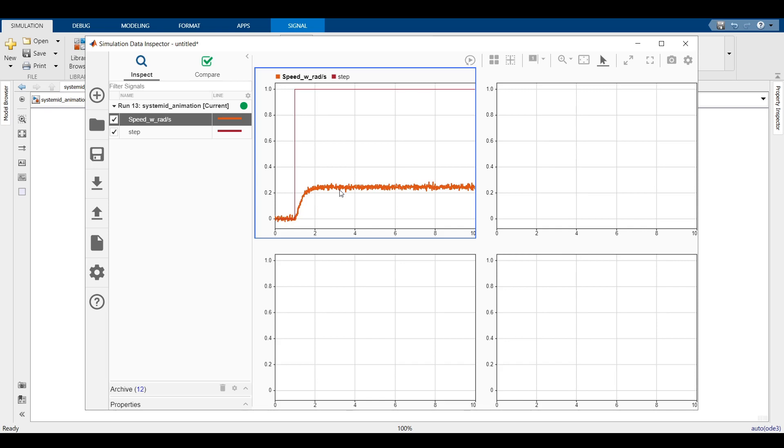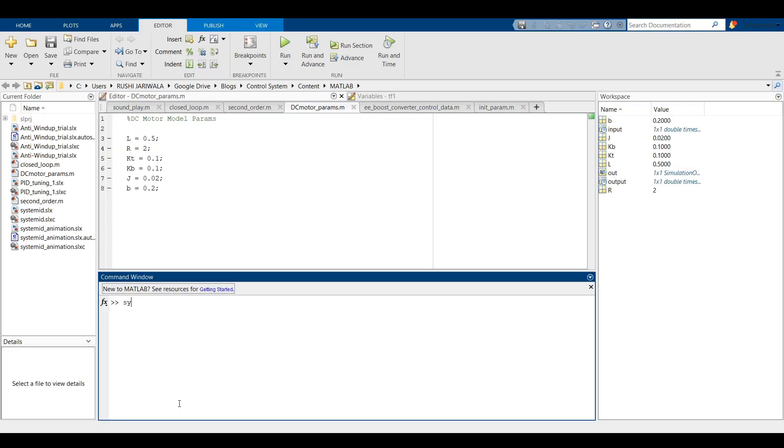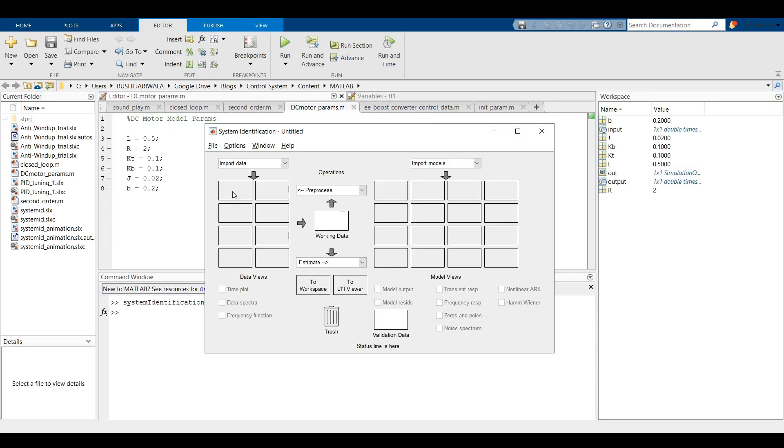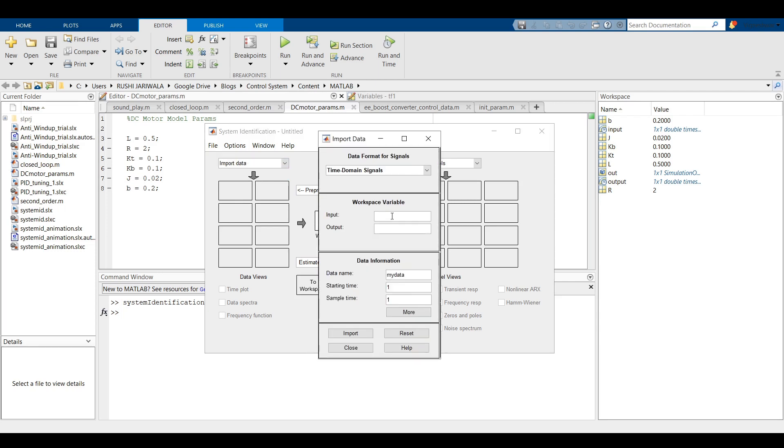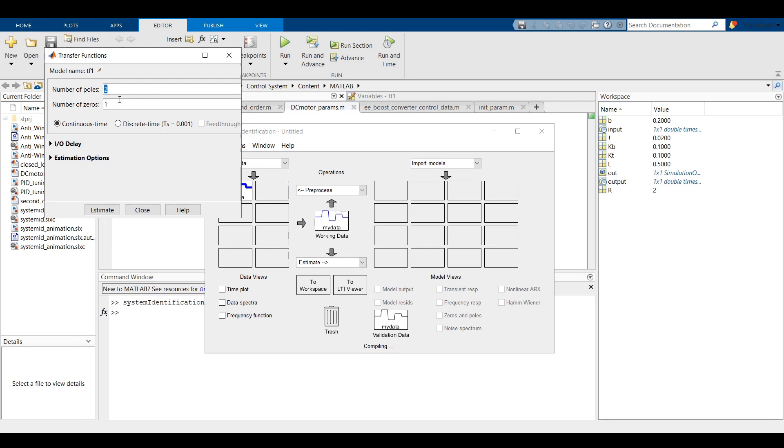Considering that these were the input and the outputs that you would get from a real system, we will use them in the System Identification Tool. First, we will log these values into the workspace and then open the System Identification Toolbox. The next step is to import the time domain data that we logged. You can also filter the noise using preprocessor but we will not do that now. Let us see how the System Identification works with noisy data.